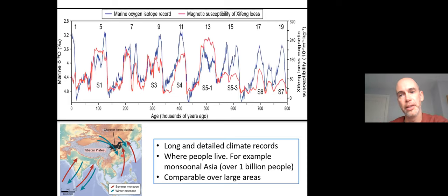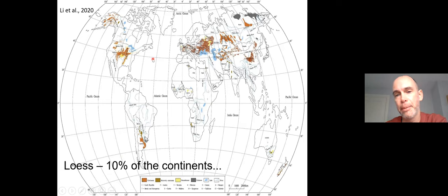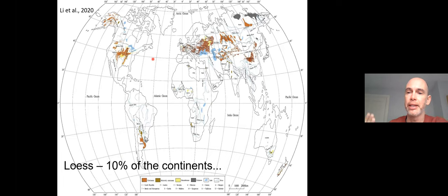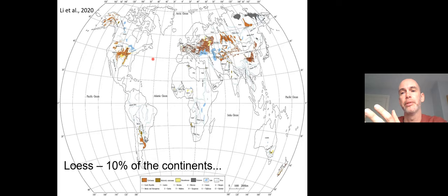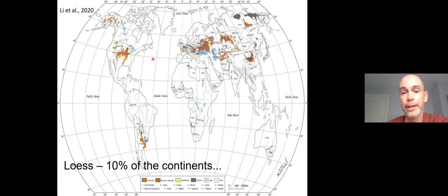An important aspect of loess is that we can trace climate records and compare them over a very large area. Loess deposits cover, as shown on this map, more than 10 percent of the world's continents. This means we can take a climate record and directly compare it to another one with the same sets of assumptions — incredibly widespread and useful for tracing climate over a wide area.